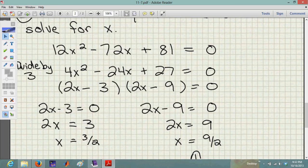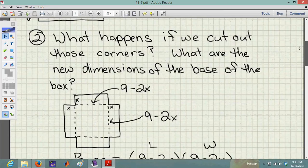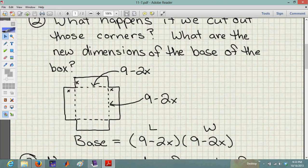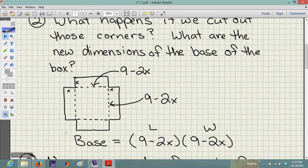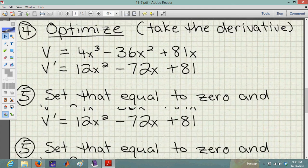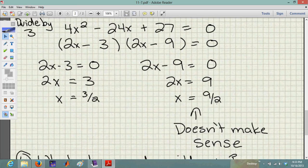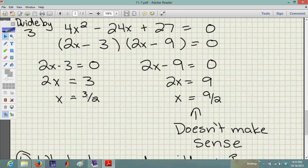So I've got some news for you. 9 halves, that's 4 and a half. If I have my x equaling 4 and a half, let's go back and look at that box really quickly. If this is 4 and a half, and this is 4 and a half, that's my entire 9 inches there. And we can't have that. That's not a box. There's no way to fold it, because my flap would go to here, it would go to here. It's not a box. That's impossible. So we know that we can't use this 9 and a half, so we need x equals 3 halves.